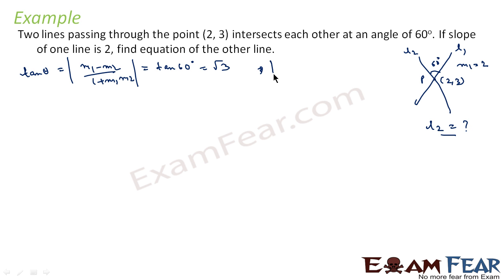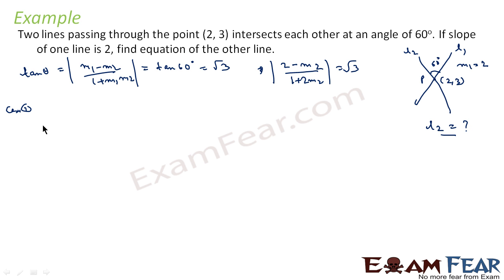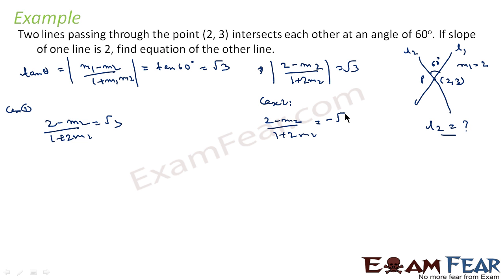We can say that mod of (2 minus m2) divided by (1 plus 2·m2) is equal to tan 60° which is √3. If we remove the modulus, we have two cases. Case 1: (2 minus m2) / (1 plus 2·m2) = √3. Case 2: (2 minus m2) / (1 plus 2·m2) = −√3.